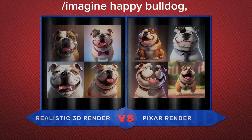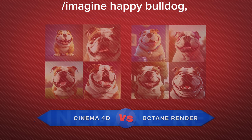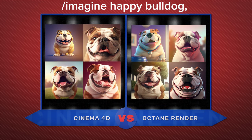Hello everyone, welcome back to another Mid-Journey tutorial. This one I'm going to show you how to make any type of image three-dimensional, like I've got here. I've got six examples here, as you can see. In order to get the results that I have here, and these are first-time results — they're not re-renders or anything like that.